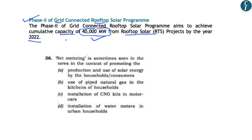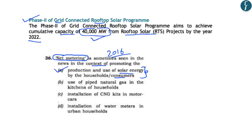A concept related to these grid-connected rooftop solar programs is net metering. Net metering is related to the billing system associated with grid-connected rooftop solar plants. Households can earn money from their grid-connected rooftop solar plants. This was directly asked in a 2016 preliminary examination question, where net metering was described in the context of promoting the production and use of solar energy by households, who can produce more electricity and earn money by connecting their solar rooftop power plants to the grid system.